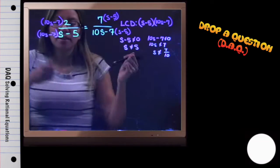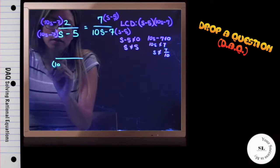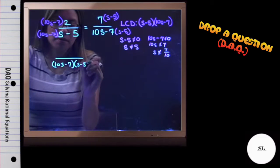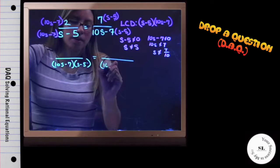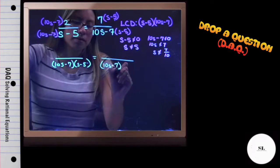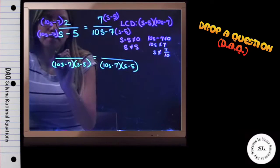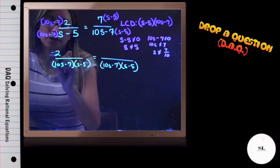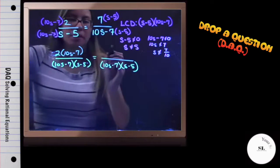Now when I am simplifying this, both sides have the same denominator. 10s minus 7, s minus 5. Same denominator on this side as well. And my numerators, I am just going to go ahead and write the 2 first. It does not matter, I will distribute either way the same.